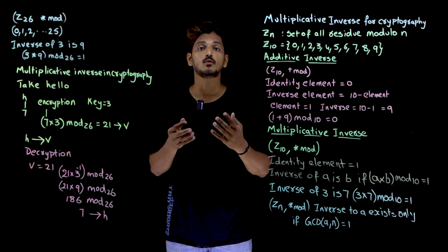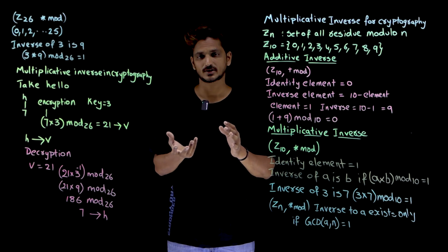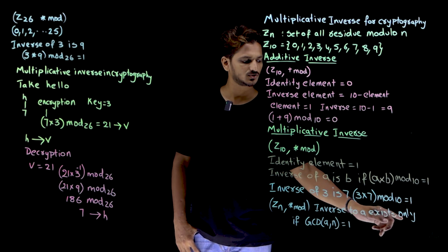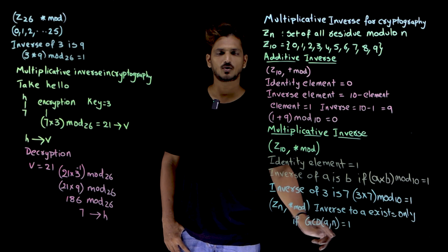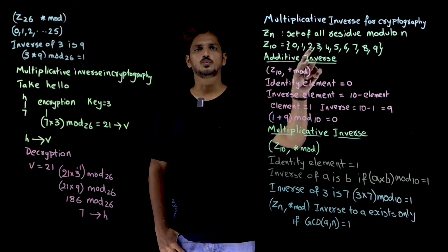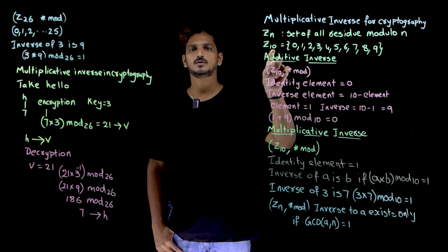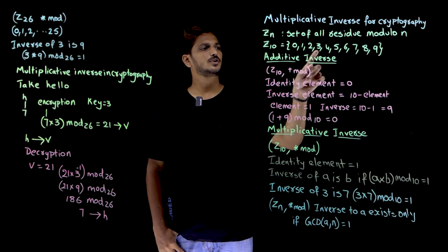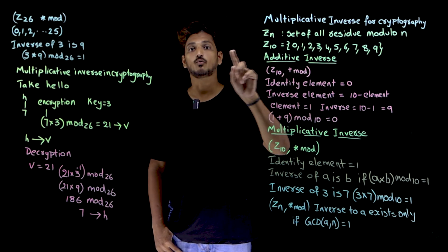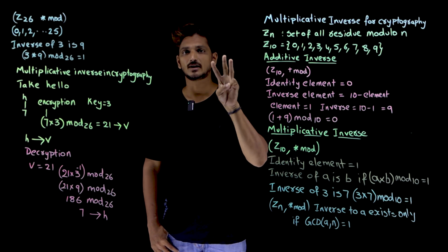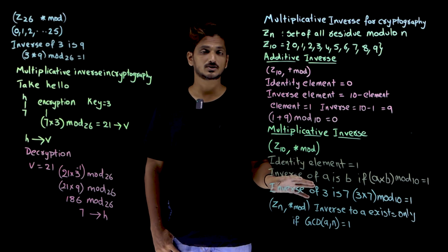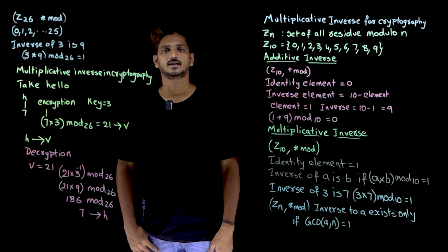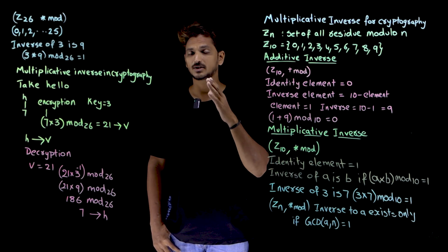So which numbers will have an inverse element? Only a few numbers will. The inverse of element a exists only if GCD(a, n) = 1. For example, GCD(2, 10) = 2, which is not 1, so the inverse does not exist for 2. But GCD(3, 10) = 1, so the inverse element exists for 3. Inverse element in multiplication modulo exists only for those numbers where GCD(a, n) = 1. This is the basic mathematics from modulo operations and group theory.